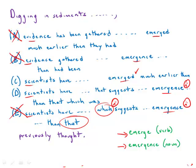D has 'emergence than that which was previously thought.' This is an excessively wordy phrase here in D, so that's out.